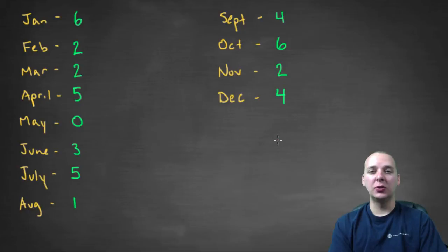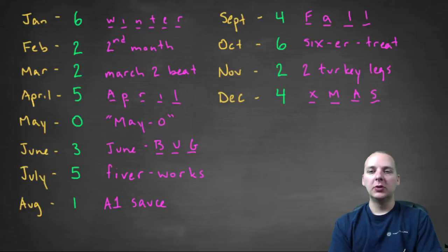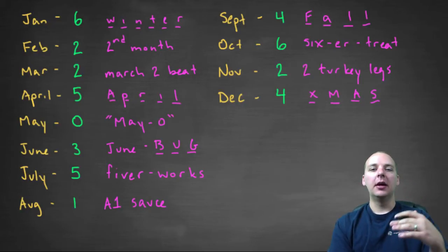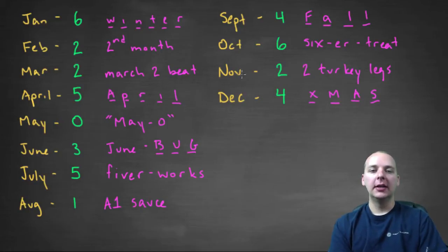It looks like a ton to memorize. It's 12 things to memorize. So here's what I think about when I hear a month like November. I think November, Thanksgiving, turkey, eating turkey, turkeys have two legs. And so November would be a two because I think two turkey legs. Along those same lines, we can do things like that for all the months.